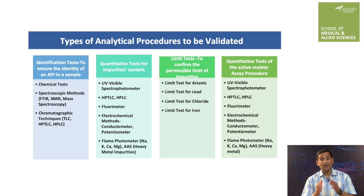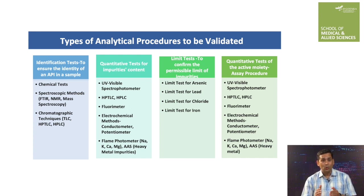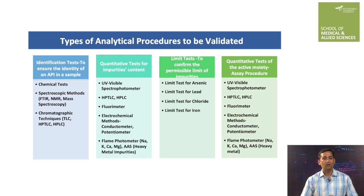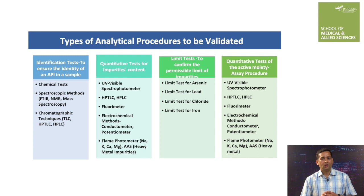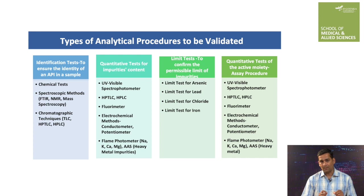We can categorize these processes into four major categories. The first one is the identification test, which is performed to ensure the identity of an API in a sample. Identification tests are very important in case of raw materials as well. We need to confirm the identity of whatever chemicals we have purchased. For this, we can perform various qualitative chemical tests or use spectroscopic methods such as FTIR, NMR, and mass spectroscopy.